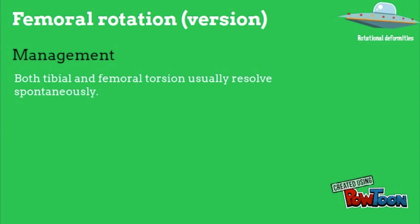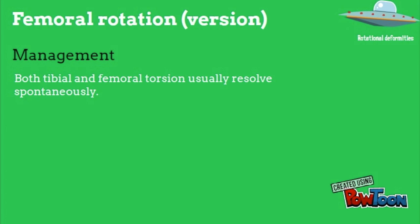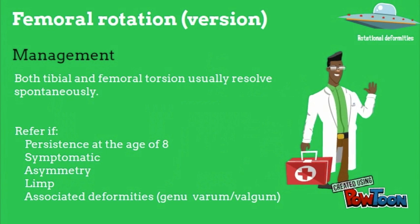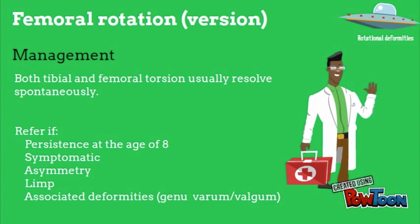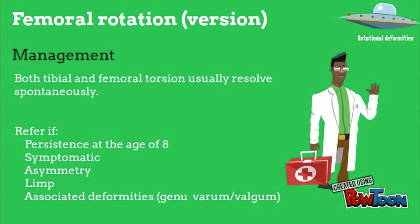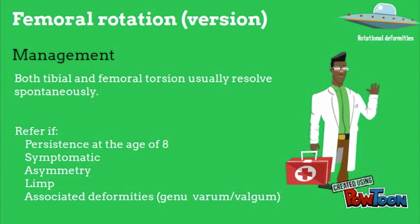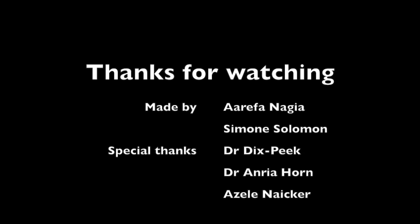Management: Both tibial and femoral torsion usually resolve spontaneously. Refer if there is persistence at the age of 8, the patient is symptomatic, there is asymmetry, a limp, or associated deformities. Thanks for watching!